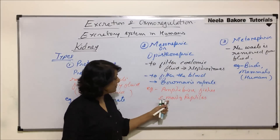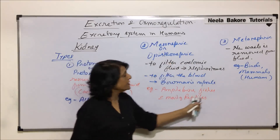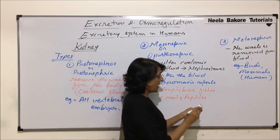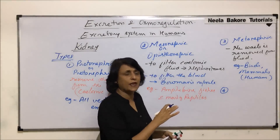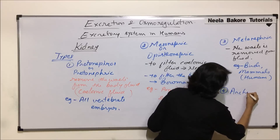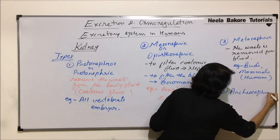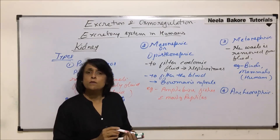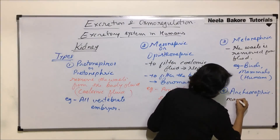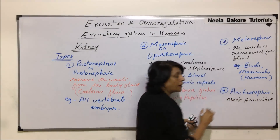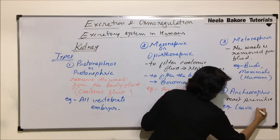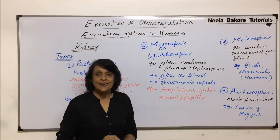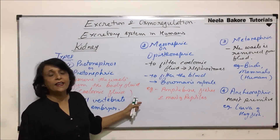Most reptiles have meso-nephric kidneys, but some reptiles have meta-nephric kidneys too. One more special type is the archaeo-nephric kidneys, which are the most primitive of all. They are found in the larvae of hagfish.